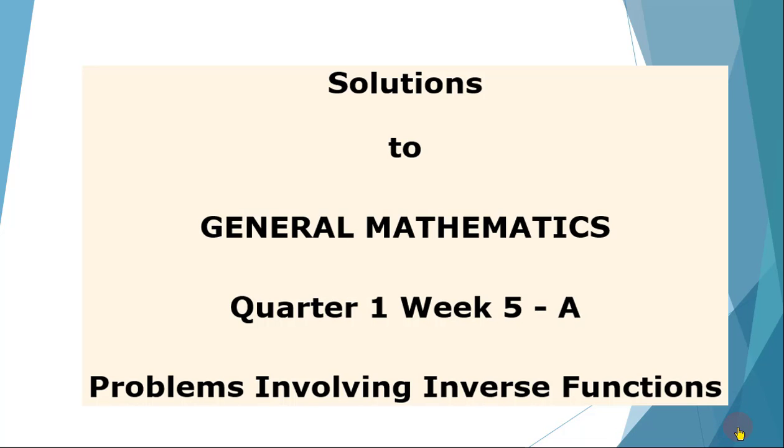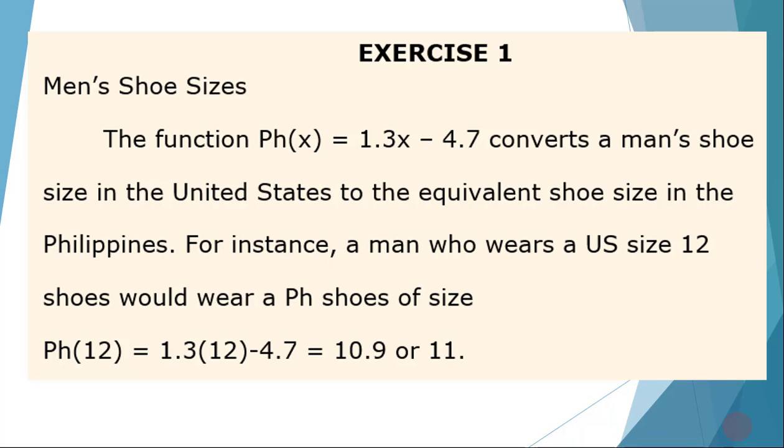We have the exercises here. So for number one problem on men's shoe sizes, the function Ph(x) = 1.3x - 4.7 converts a man's shoe size in the United States to the equivalent shoe size in the Philippines. For instance, a man who wears a US size 12 shoes would wear a Ph shoes of size Ph(12) = 1.3 times 12 minus 4.7, and that is equal to 10.9 or size 11. So we just substitute 12 to x.